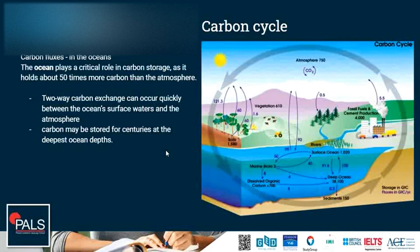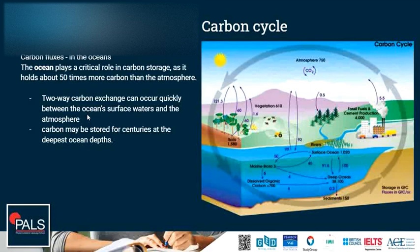Carbon fluxes in the oceans. The oceans play a very important role in carbon storage as they hold about 50 times more carbon than the atmosphere. The deep ocean has around 38,100 gigatons of carbon, whereas the atmosphere holds around 750 gigatons. In the ocean, a two-way carbon exchange can occur quickly between the ocean's surface waters and the atmosphere, and carbon may be stored for centuries at the deepest ocean depths. This carbon is cycled very slowly.